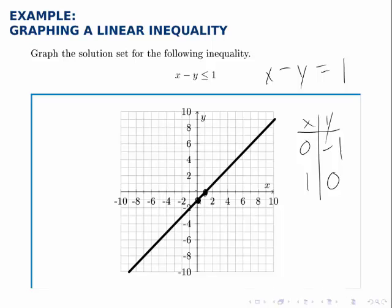To make things easier, I typically pick the origin, 0, 0, as the test point, as long as it's clearly on one side of the line or the other. If the line passes through 0, 0, or so close to it that you can't tell which side the origin is on, then pick a different point.